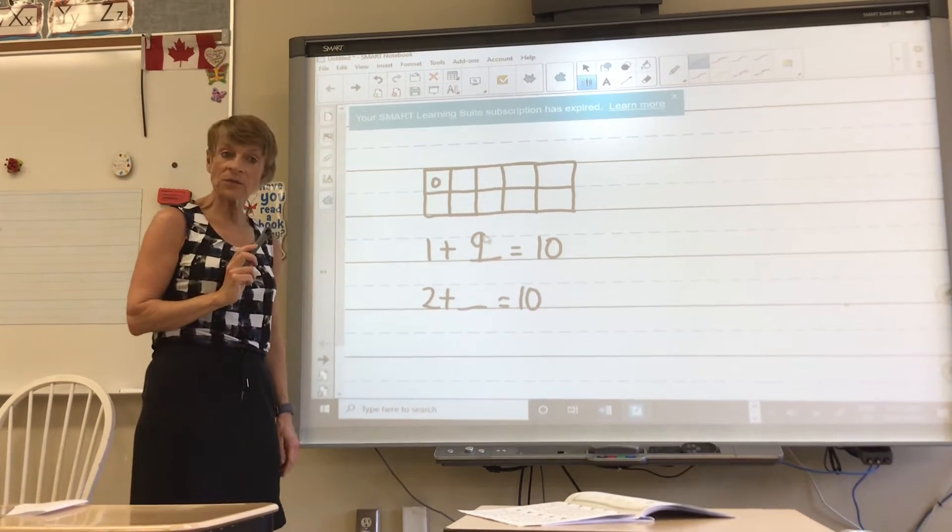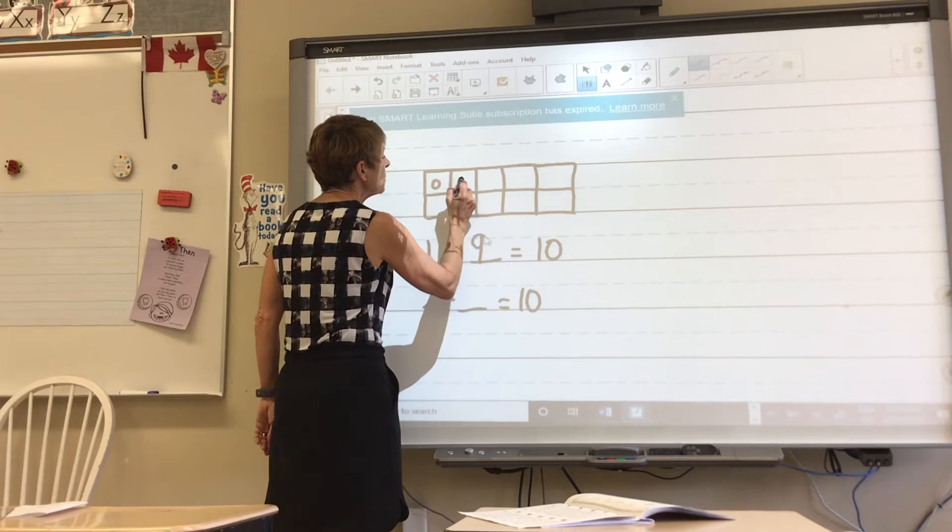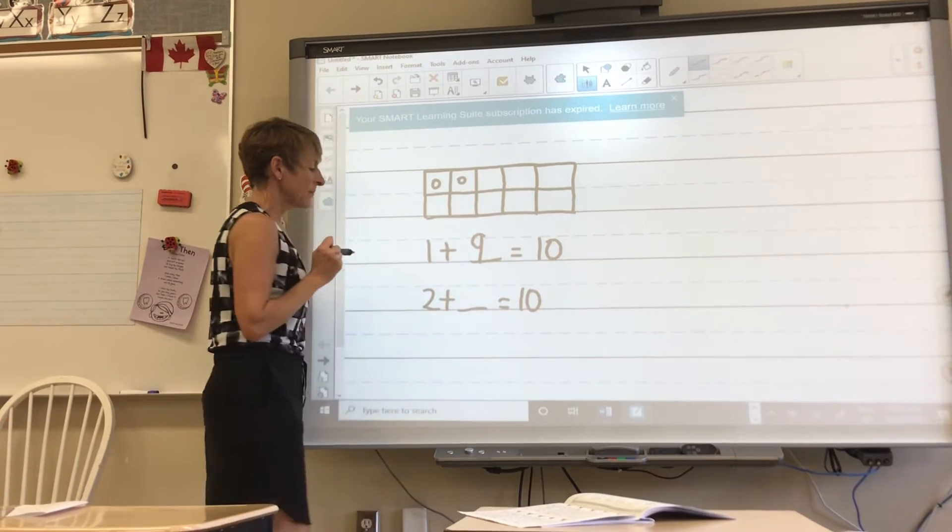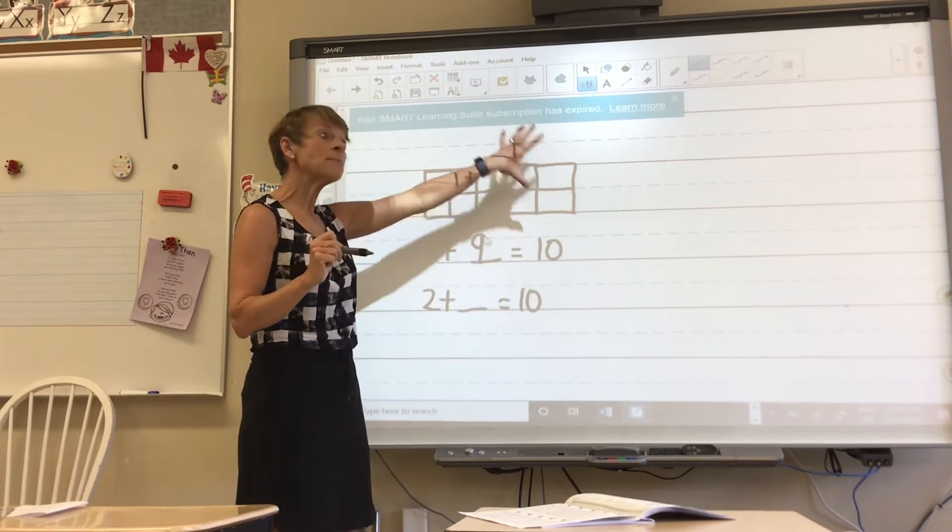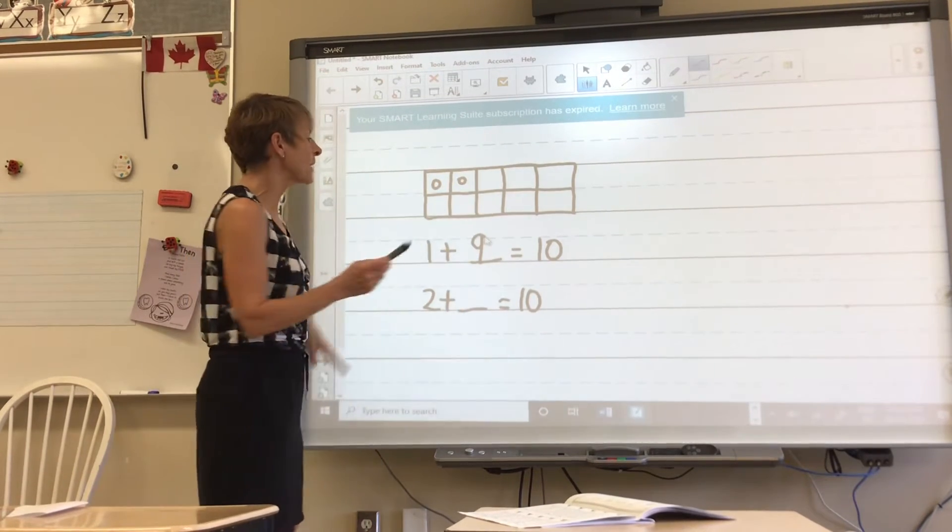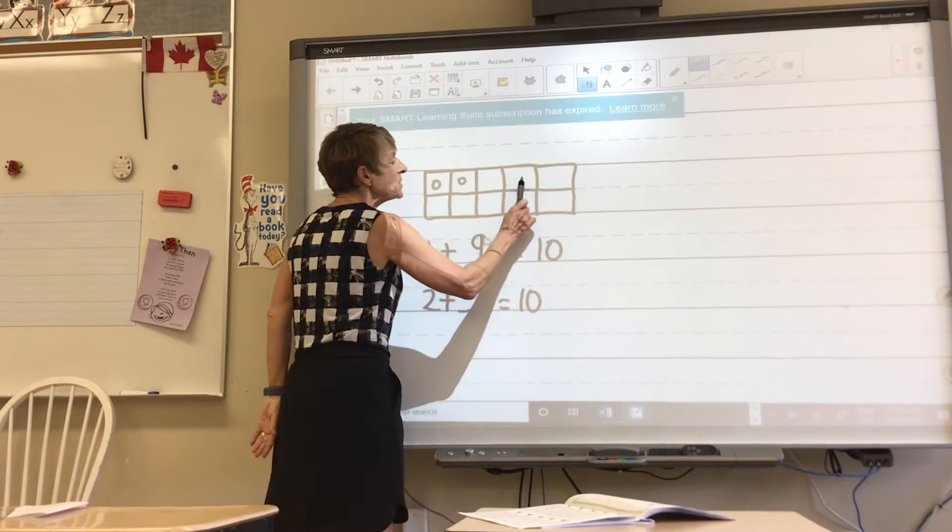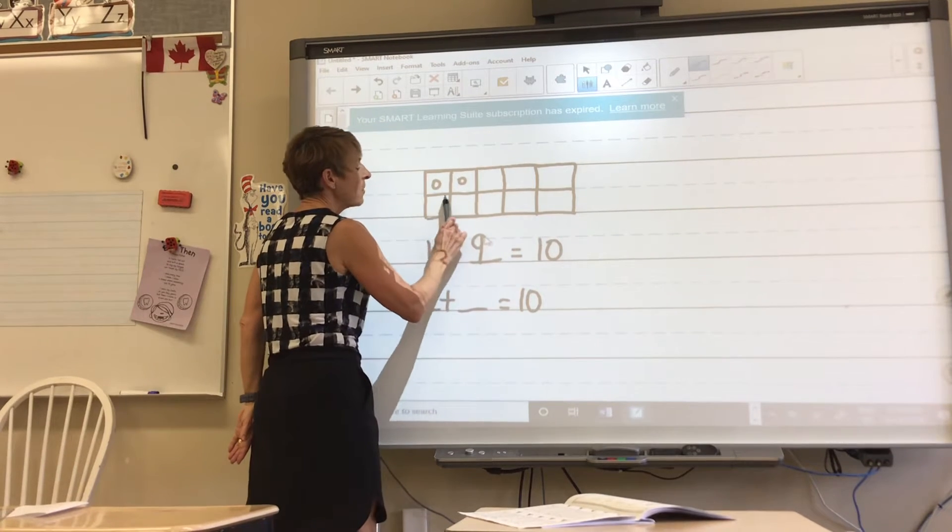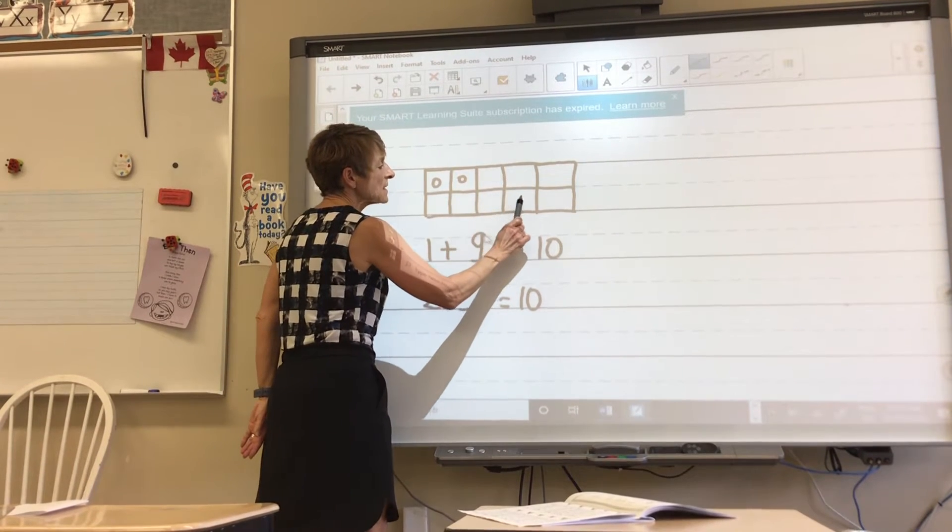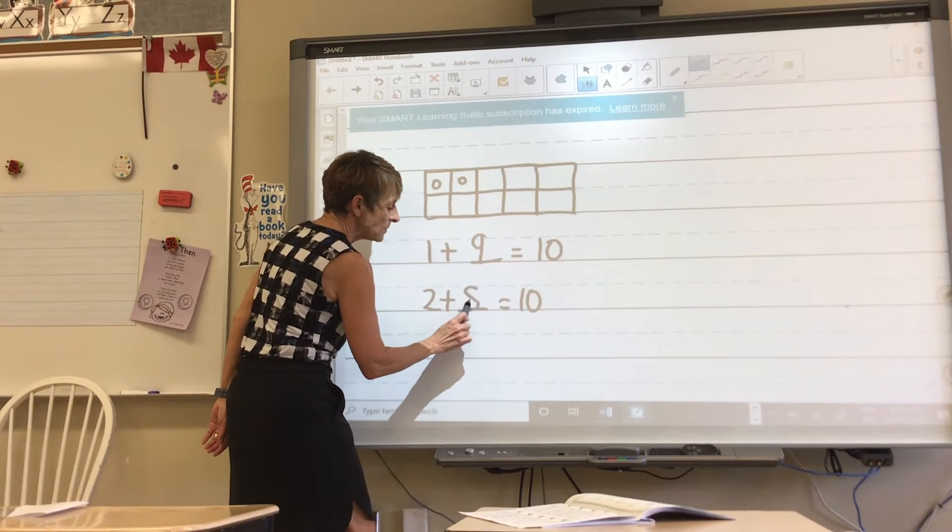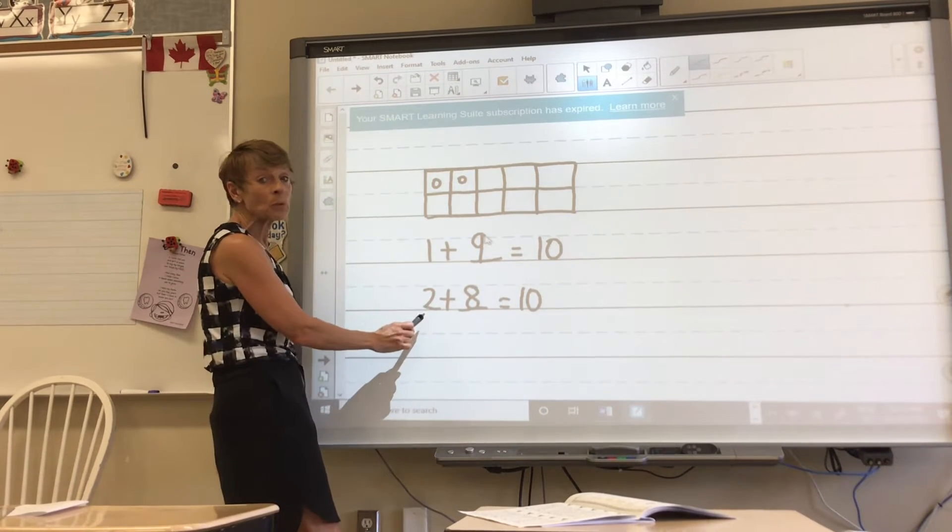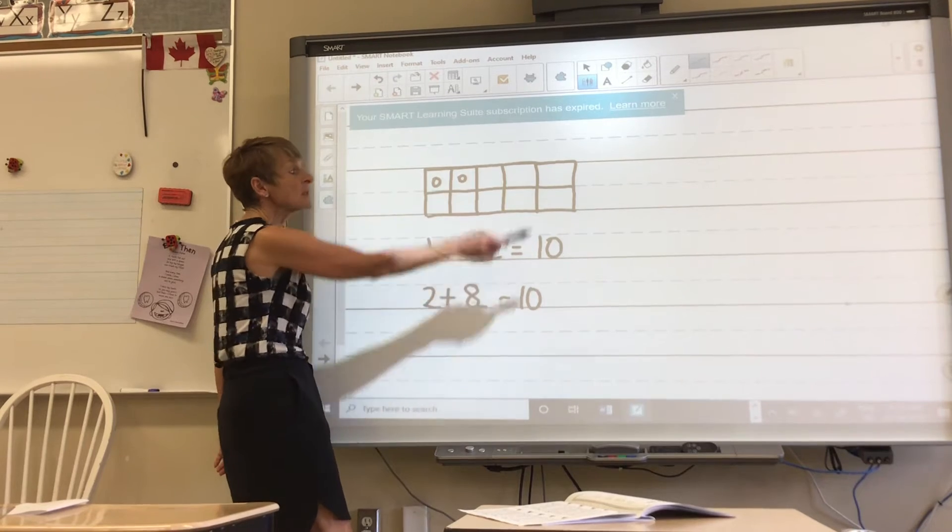Now we're going to go to the next one and we're going to put two circles. How many spaces are left to make ten because all of this is a 10 frame? One, two, three, four, five, six, seven, eight. So you will put down 8 because 2 plus 8 equals 10.